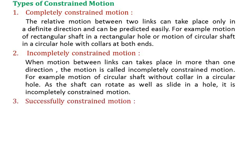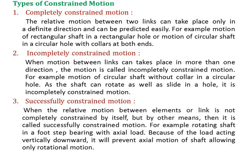The third type is successfully constrained motion. When relative motion between elements is not completely constrained by itself but by other means, it is called successfully constrained motion. For example, a rotating shaft in a footstep bearing with an axial load — the load acting vertically downward prevents axial motion of the shaft, allowing only rotational motion. An external force is required to make the motion constrained.